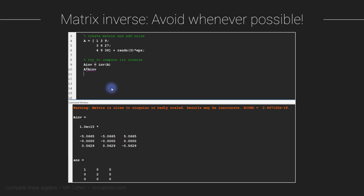That's because there are numerical inaccuracies, instabilities, and computer rounding errors, so the inverse might not actually be accurate. Here is an example: a 3×3 matrix that is theoretically invertible — I've added some noise. When I tried to compute its inverse using MATLAB's 'inv' function, MATLAB gave a warning: 'matrix is close to singular or badly scaled — results may be inaccurate.' You can also see that multiplying the matrix by its computed inverse does not produce the identity matrix exactly, only something close to it.